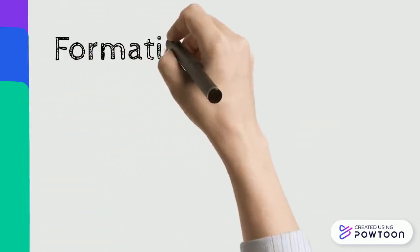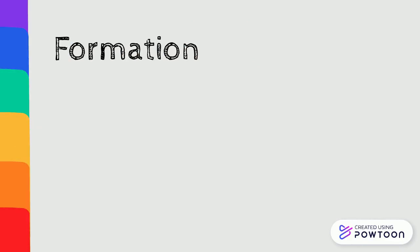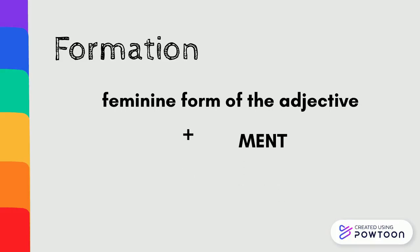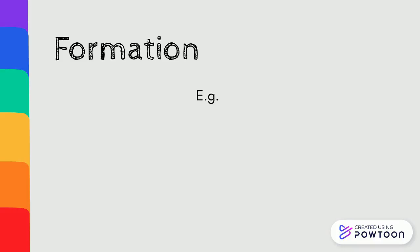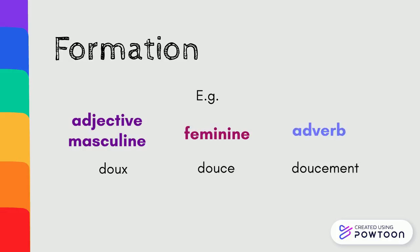To form an adverb from an adjective, you generally take the feminine form of the adjective and you add the suffix -ment, m-e-n-t. For instance, adjective at the masculine form doux, feminine form douce, adverb doucement, soft, softly.